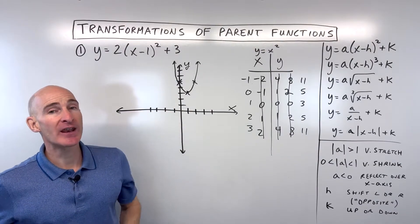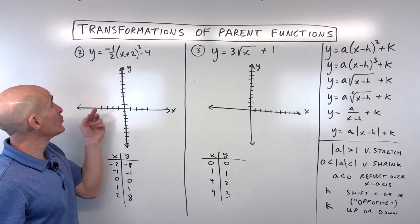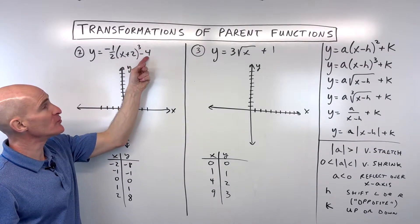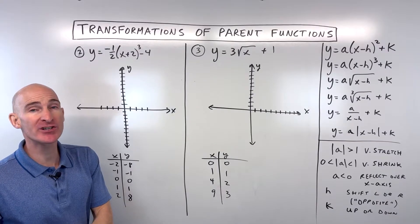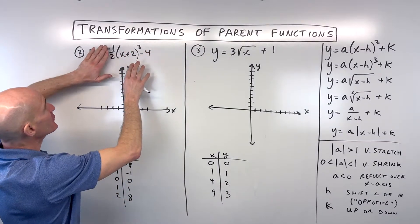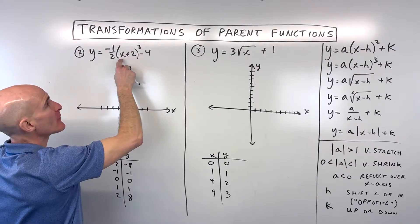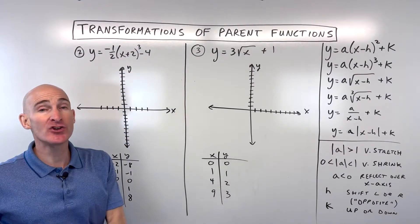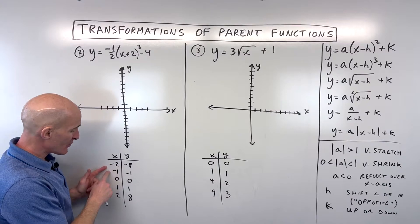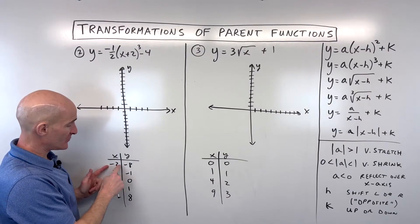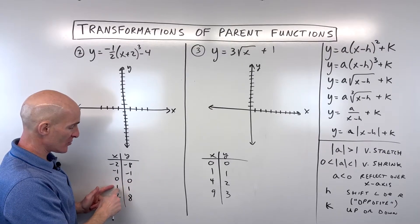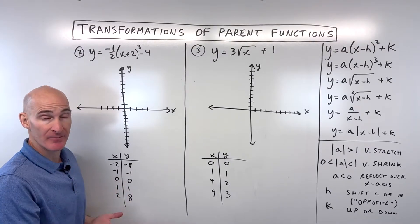Example 2: y = -½(x + 2)³ - 4. The parent function is x³ — a cubic. Key points: (-2)³ = -8, (-1)³ = -1, 0³ = 0, 1³ = 1, 2³ = 8.